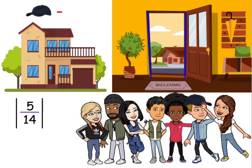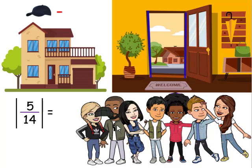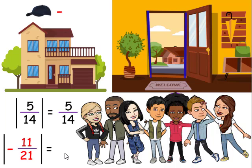Which individual would be affected by this rule? If you stated this particular person, you would be correct. He had a baseball cap on, and this person has a beanie. When we look at the absolute value of 5 over 14, this is equal to 5 over 14, just like all the other individuals who were not wearing a hat weren't affected. But when we see a negative sign, it's like wearing a hat. The absolute value of negative 11 over 21 is equal to 11 over 21 — we remove that negative just like we removed the hat.